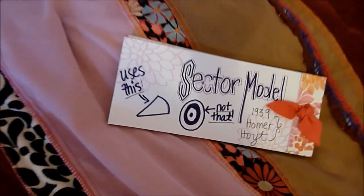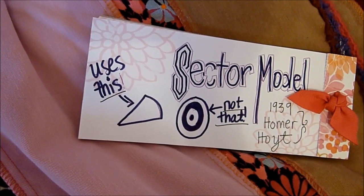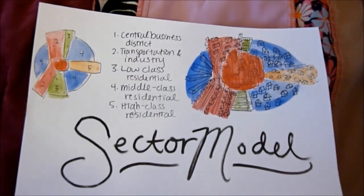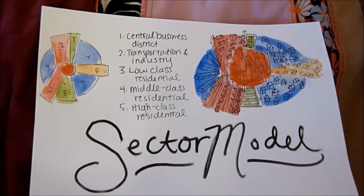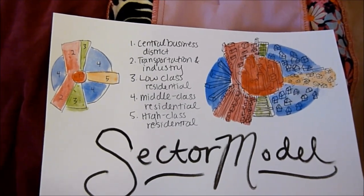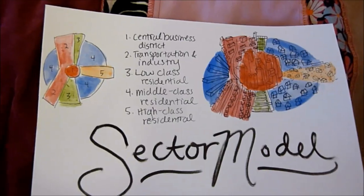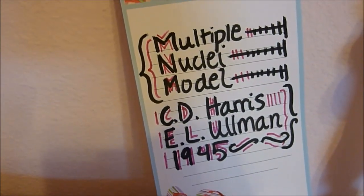The second model, which is a further development of the concentric zone model, is called the sector model, where each zone is a wedge rather than a ring around the CBD. This model was created by Homer Hoyt in 1939. According to the model, the transportation and industry sector branches off from the CBD, with the lower class residences running alongside it. The high class residential area branches out in the opposite direction of the lower class areas, and the middle class residences fill up the remaining space. The sector model takes into account transportation and environmental factors, and how they would affect where people live, such as how the loud noise of the transportation sector keeps the high class sector far away, since the people living in that area can afford to buy housing away from activity.